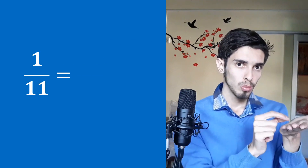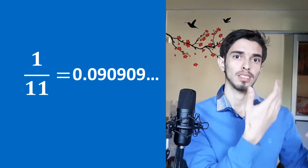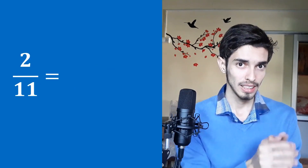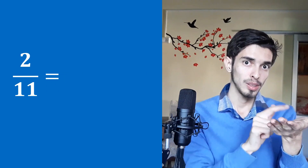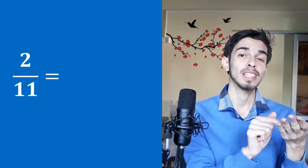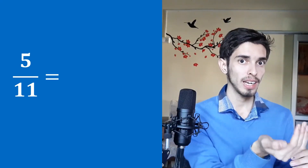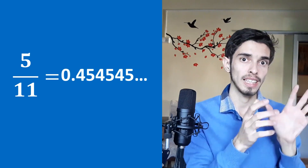Another really cool one: 1/11 is 0.090909 repeating. Now that you know 1/11, you can find others too. For 2/11: take 09, that's 9 multiplied by 2 equals 18, so 2/11 is 0.181818 repeating. For 5/11: 9 times 5 is 45, so 5/11 is 0.454545 repeating. So whenever you are dividing by 11 and get a remainder, you can use this pattern.